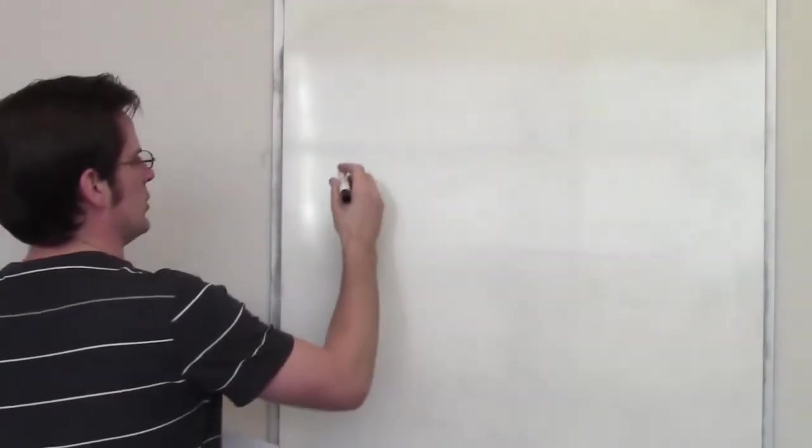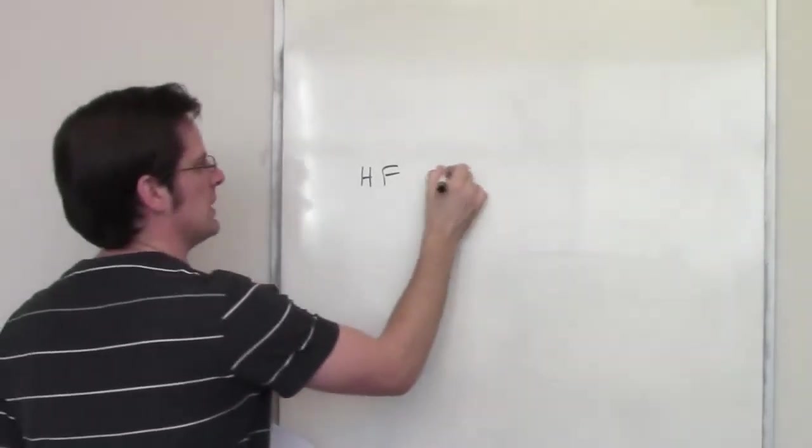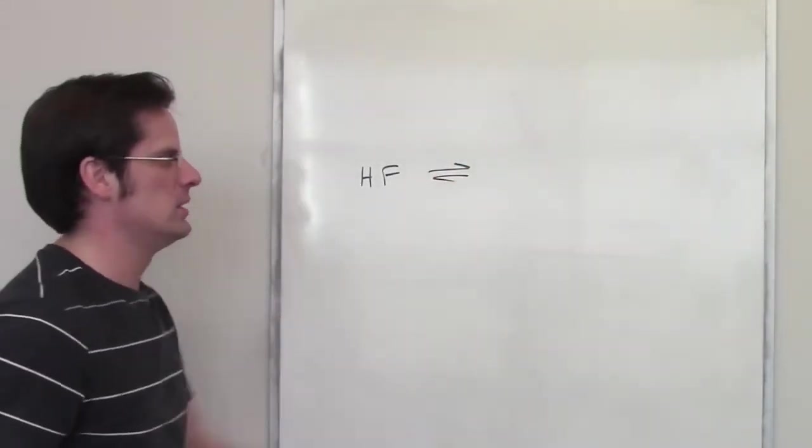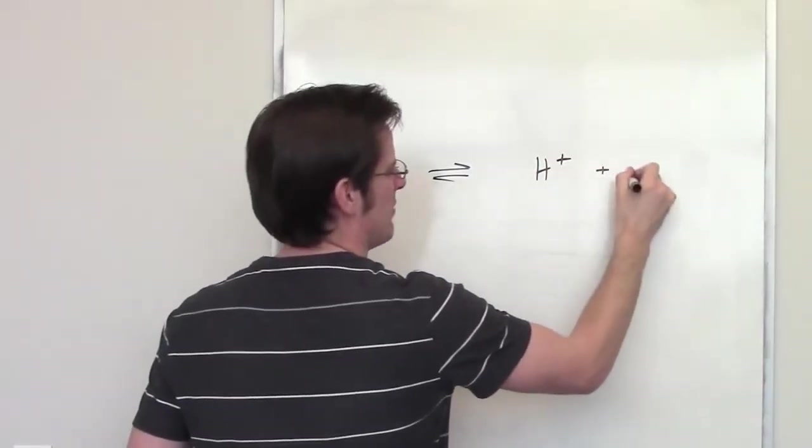This question tells me that I've got a solution of HF. HF is a weak acid, just so you know, so I'll put little equilibrium arrows. For strong acids, I put a one-way arrow, but this is a weak acid, so I've got HF. It's going to dissociate to give H+ and F-.